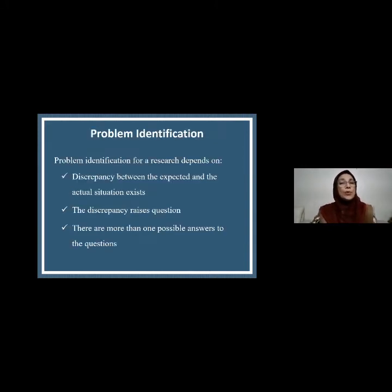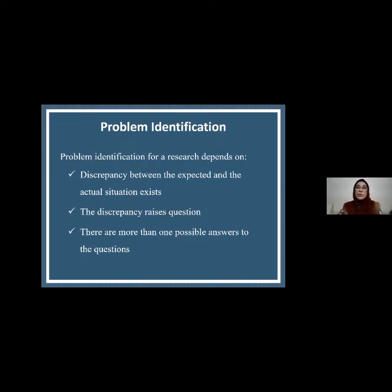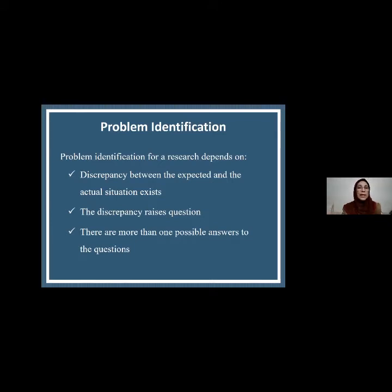The first point is problem identification. We have to know which problem I want to solve — this is the initiation of research. Problem identification can be done on the basis of the discrepancy between the expected and the actual situation. The actual meaning of a problem in research is that I am in an existing condition and I might have a better one. That difference between the existing and the expected — that is the problem, and this discrepancy raises the research question.